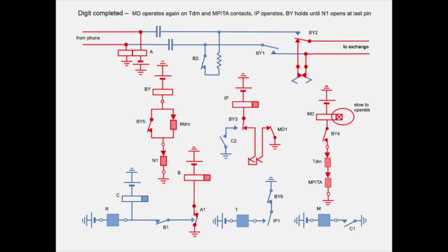The delay between transmitted digits is defined by the operate lag of relay MD plus the release lag of relay IP.